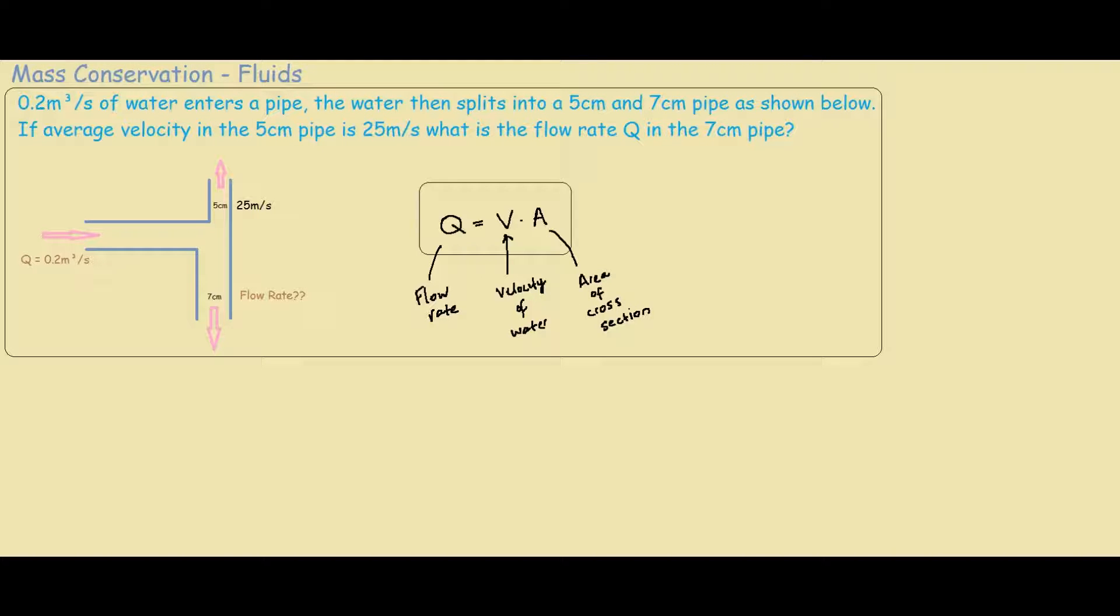The units of flow rate are meters cubed per second. For velocity, it is meters per second. And for area, it is meters squared.